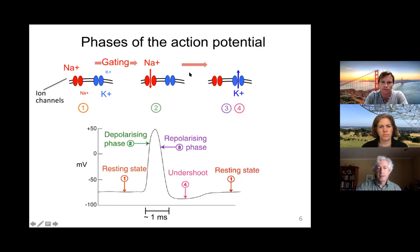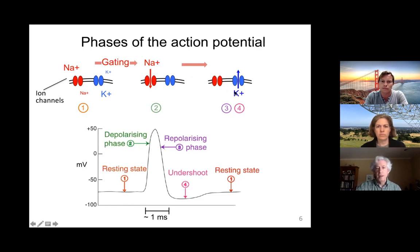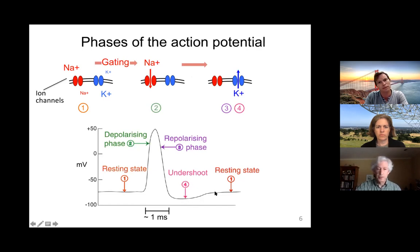After a short time, these voltage-gated sodium channels close through a process called inactivation. Then, with a delay, voltage-gated potassium channels open. Because potassium is at higher concentration inside the cell, potassium flows out, which hyperpolarizes the cell — bringing it first below baseline. Once the potassium channels close because the cell is no longer depolarized, the cell membrane recovers to its baseline resting state. That process of voltage-dependent gating is how action potentials are created.